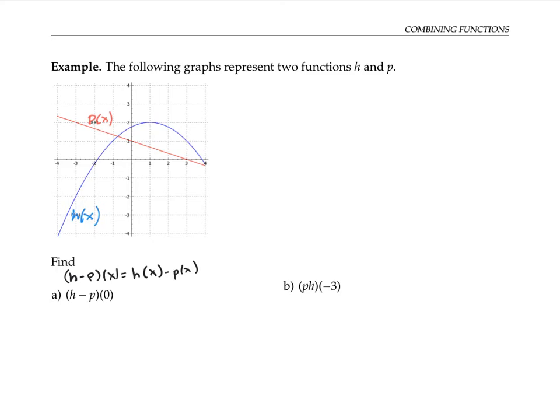So for x equals zero, h minus p of zero is going to be h of zero minus p of zero. Using the graph, we can find h of zero by finding the value of zero on the x axis and finding the corresponding y value for the function h of x. So that's about 1.8.